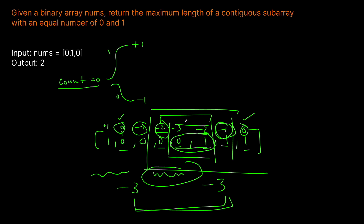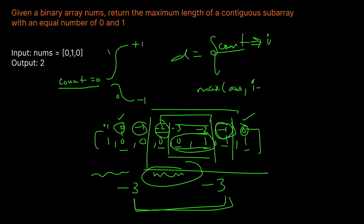What we want to do is maintain a dictionary which maps the count to the last index we saw it at. If we've seen the count before, we want to update our answer with the maximum of the current answer and the difference between the last time we saw that count and our current index — so current index i minus D of that count. That gives us the window length. If the count isn't in the dictionary, we just put it in and continue. And we're not updating the count's stored index when we've already seen it, because we want that original index to be as far left as possible so we get the widest window.